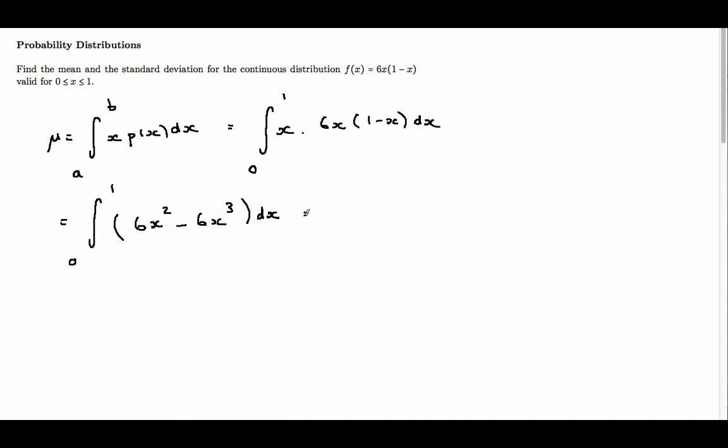And then we need to perform the integration so we put square brackets in now between 0 and 1, 6X squared becomes 2X cubed and 6X cubed becomes minus 3 over 2X to the 4.